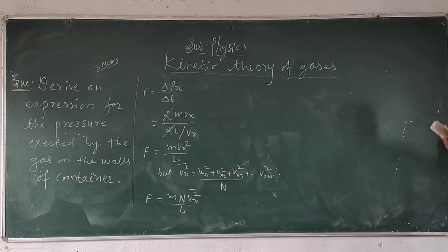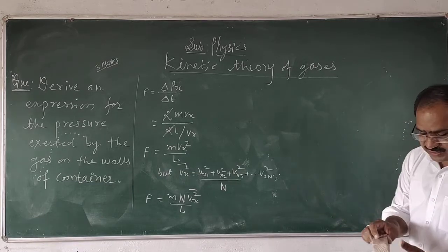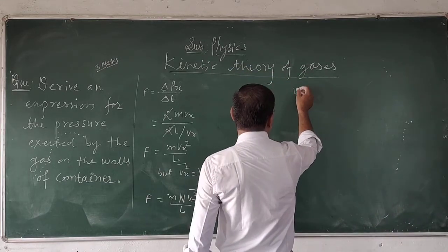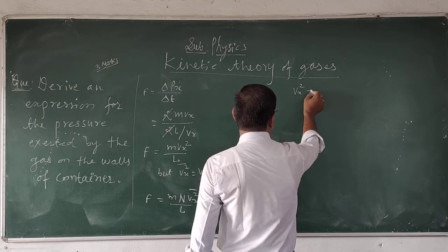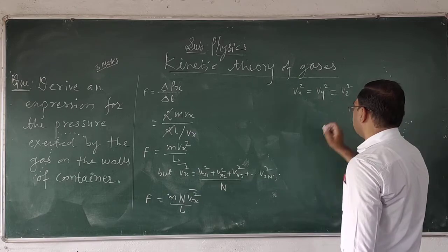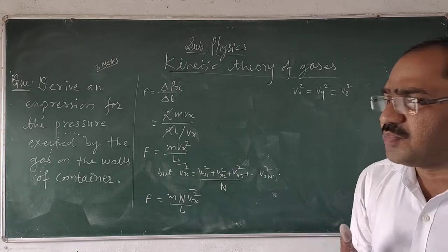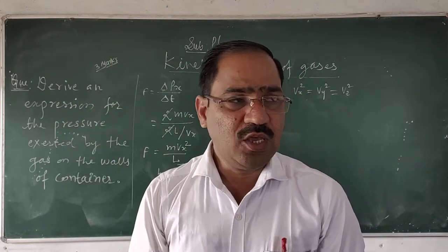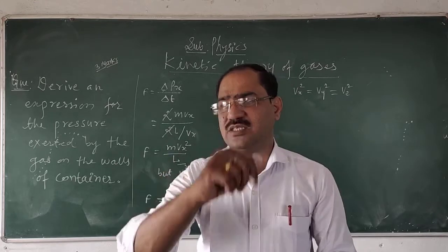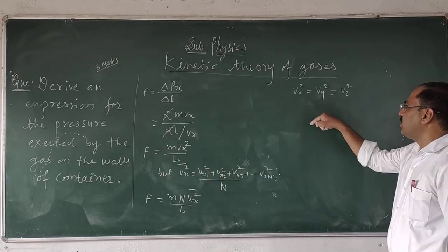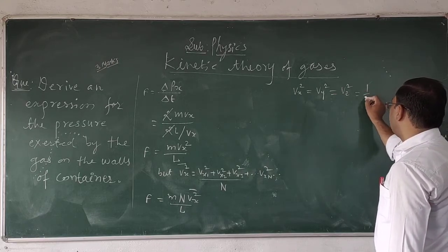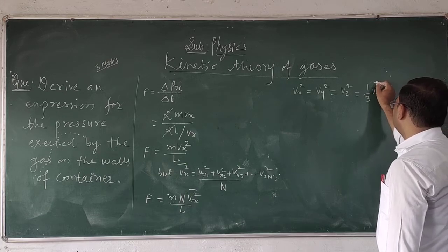There are three axes around which the particle can move randomly. Therefore, Vx squared, Vy squared, and Vz squared. We consider that an equal number of particles will move around the x-axis, equal number around the y-axis, and equal number around the z-axis. Therefore, Vx squared equals Vy squared equals Vz squared, and that is equal to one-third of V mean squared.